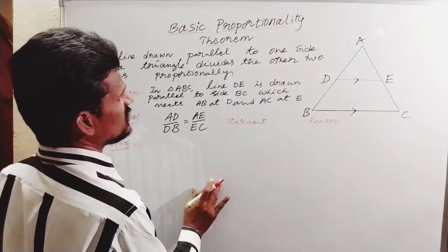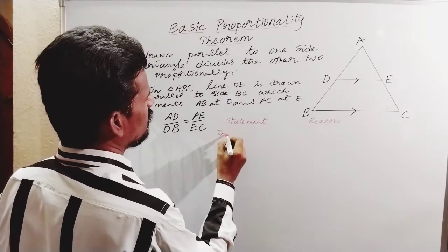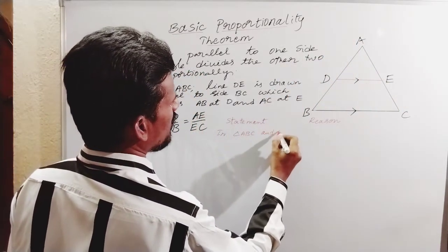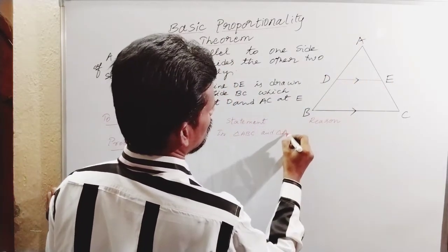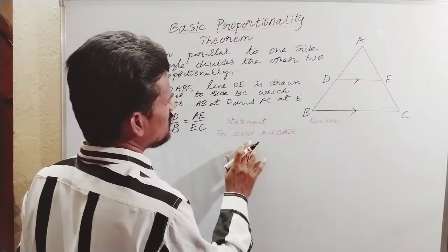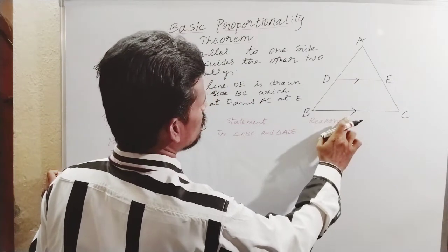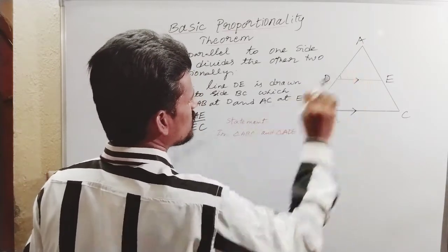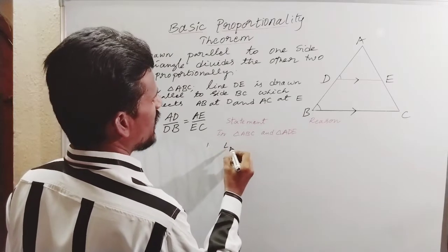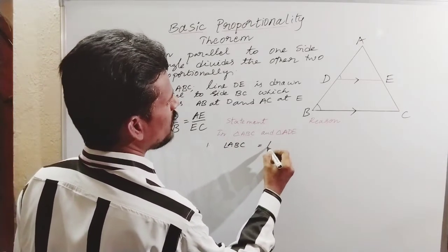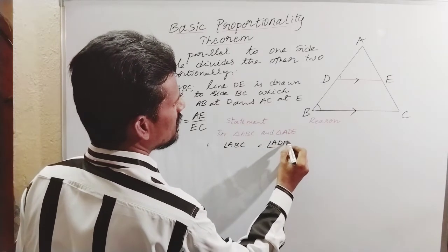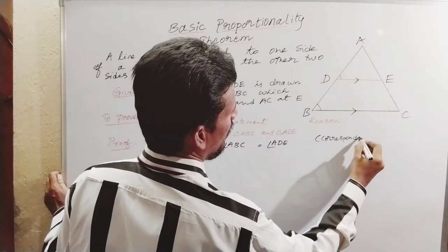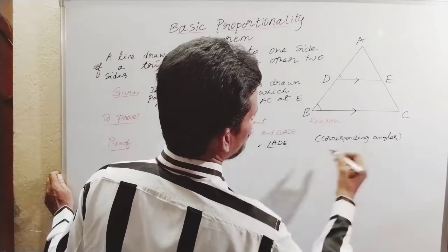First, take triangle ABC and triangle ADE. Observe here: DE is parallel to BC. So angle ADE and angle ABC are both equal because these are corresponding angles. Statement: angle ABC is equal to angle ADE. Reason: corresponding angles are equal.